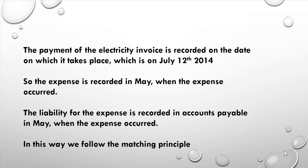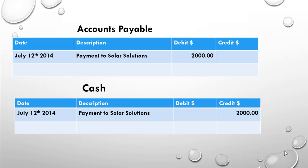The expense is recorded in May when it occurred, and the liability is recorded in accounts payable in May as well. That follows the matching principle. Then when the payment is actually made, we debit accounts payable and credit the cash account — both with $2,000.